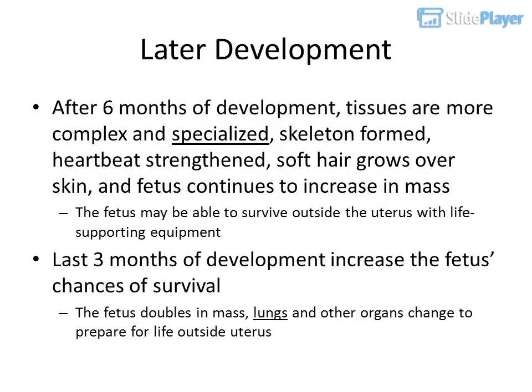After six months of development, tissues are more complex and specialized, the skeleton is formed, heartbeat is strengthened, soft hair grows over the skin, and the fetus continues to increase in mass. The fetus may be able to survive outside the uterus with life-supporting equipment. During the last three months, the fetus doubles in mass and lungs and other organs change to prepare for life outside the uterus.